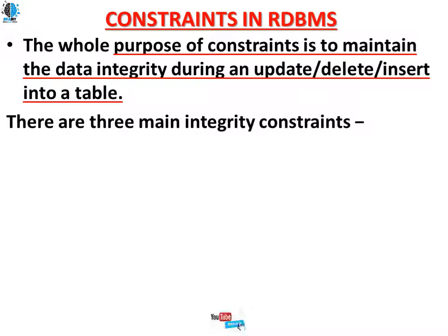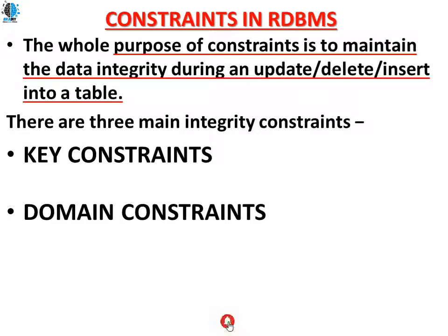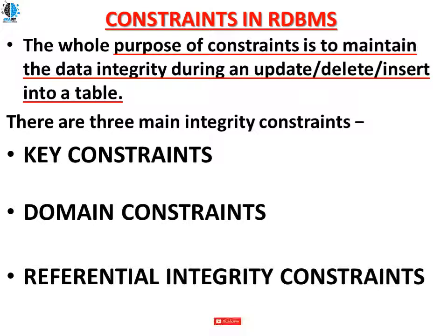There are mainly three integrity constraints in a database. First, key constraints, which focus on keys — keys are nothing but attributes. Second, domain constraints, which define what type of values and what limits apply to a particular attribute. Third, referential integrity constraints, which define how two or more different tables communicate or have a relationship in a database.